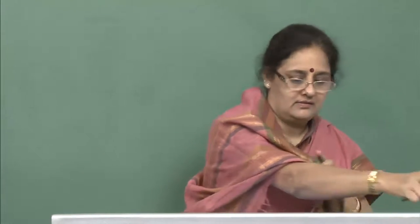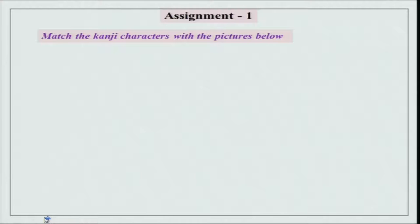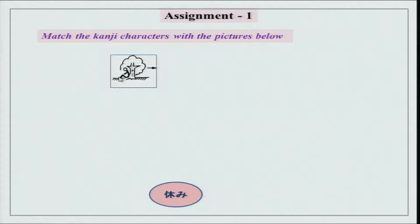Before that, as we always do, let us go over our assignments and see what we have done. The first assignment was to match the kanji characters with the pictures below. There are a few pictures and a number of kanji characters. You had to match them. Look at this picture — there is a man sitting under a tree. So it is yasumi, and of course the reading is not given. You have to recognize from the picture and the kanji characters.